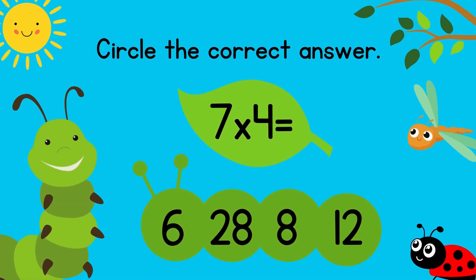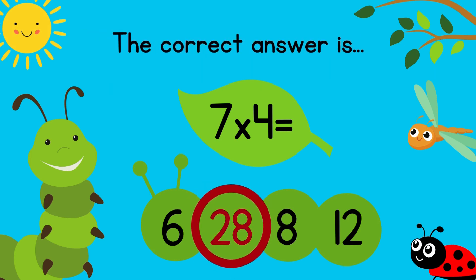Circle the correct answer. 7 times 4 equals? The correct answer is 28. Excellent!